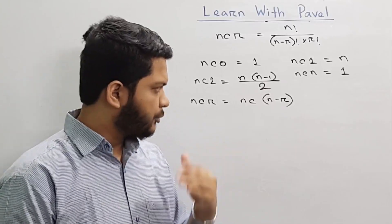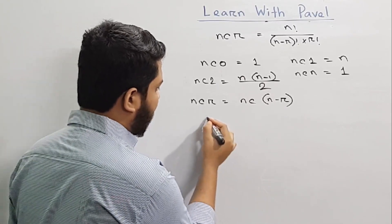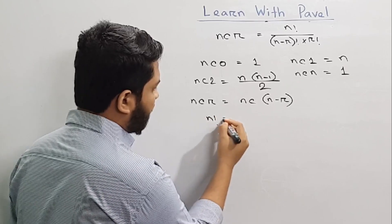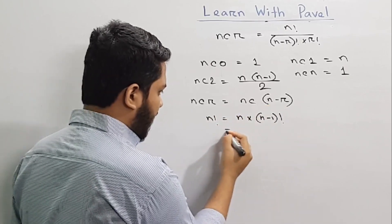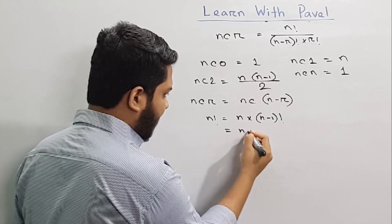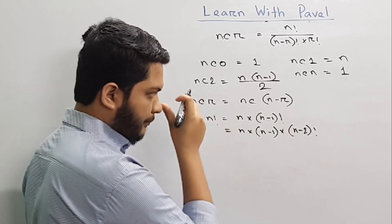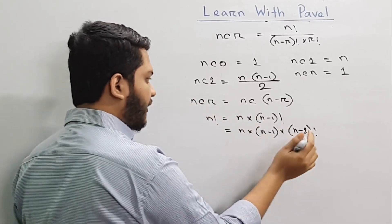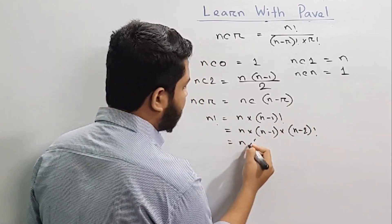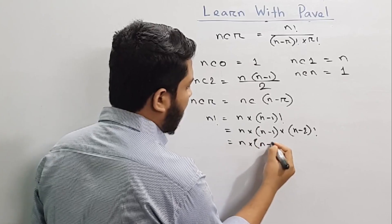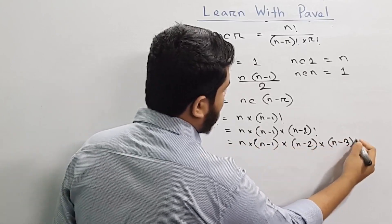I'm going to go ahead and play the n-1 factor m-1 factor. You can do the n-1 factor m-1 factor, you can put it into n-1 factor m-1 factor m. Now it's going to be the n-1 factor m-2 factor.